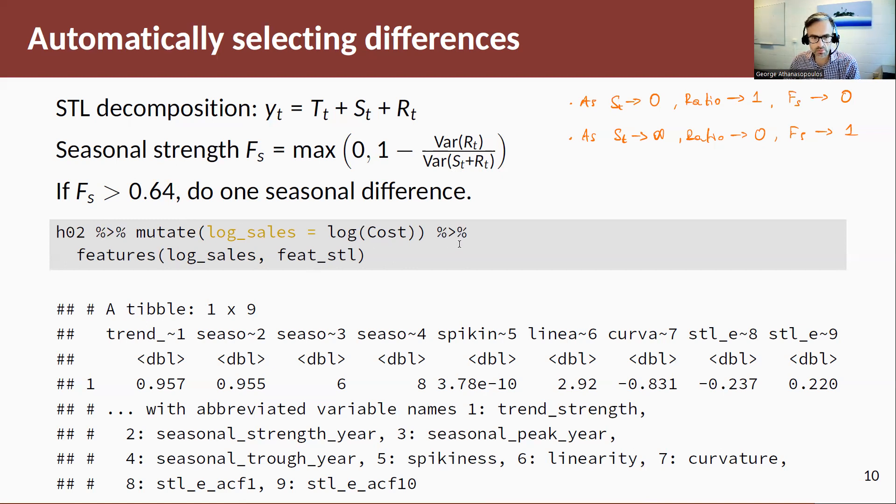Its application is quite simple. Again, in the features function, we're going to use the features underscore STL. So this returns features for the STL decomposition. And the second entry that we see here is this seasonal strength. So in this case, seasonal strength is 0.955. This is for the HO2 data, which is greater than 0.64, hence we need to take a seasonal difference.